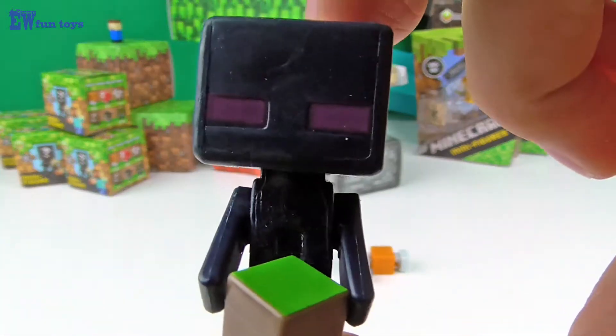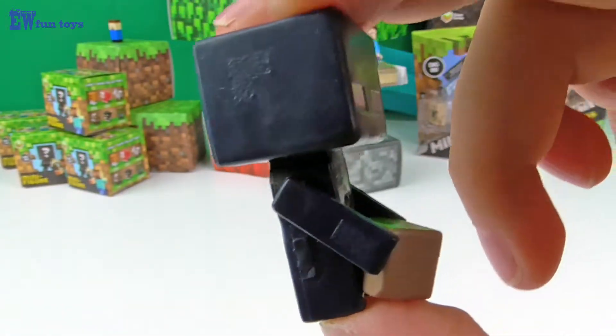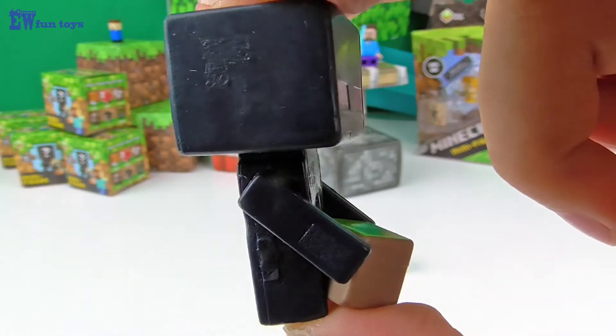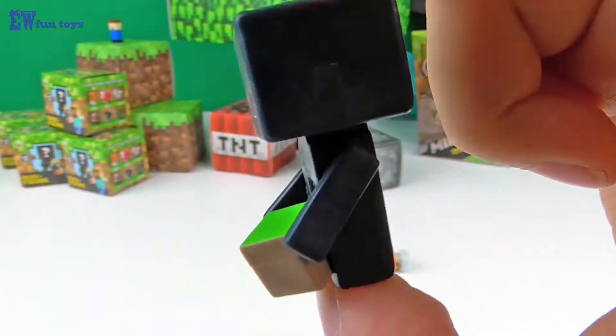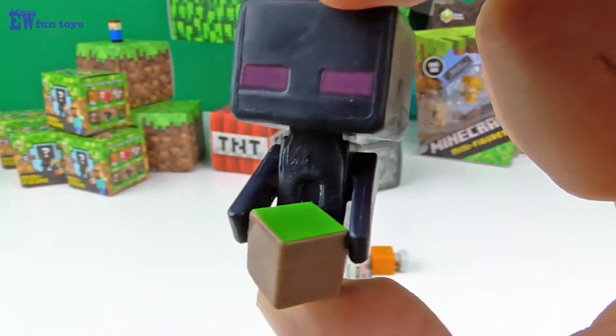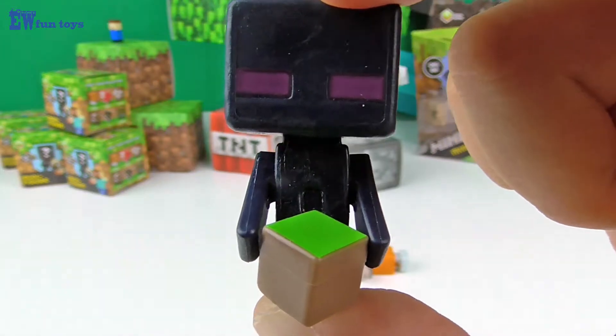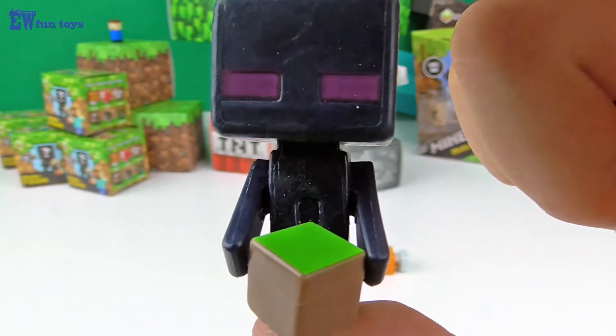This is an Enderman. It carries blocks around and it puts them back in the right place. True fact: if you wear a pumpkin and look at them, they won't attack you and they won't become hostile.